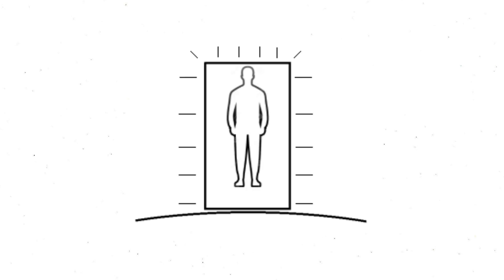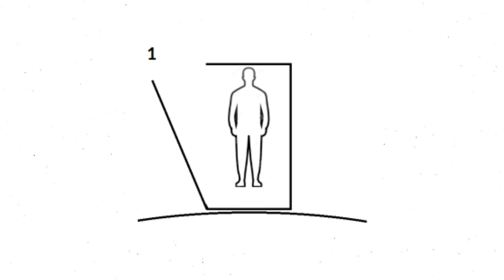Let's imagine we have a perfect and idle human-size box which allows no interaction between inside and outside, so that no particles or energy can be transferred through its walls. First, the box is open and placed on Earth's surface, with a weight machine or mass scale inside, and we weigh ourselves on it.